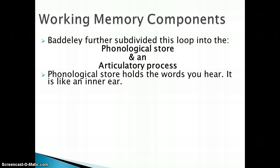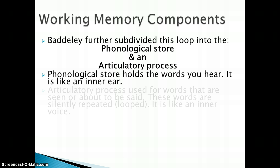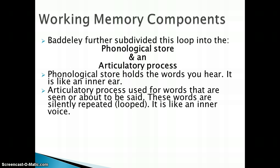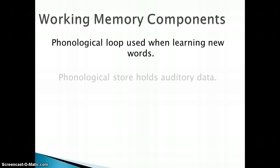Baddeley said there are two parts to the loop: the phonological store and the articulatory process. The phonological store holds the words that you hear — it's like an inner ear. The articulatory process is used for words that are seen, so if you're reading to yourself you'd use the articulatory process, or if you're about to say something you'd silently repeat the words before they come out — like an inner voice.